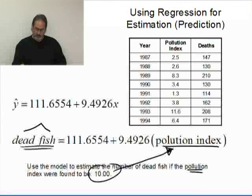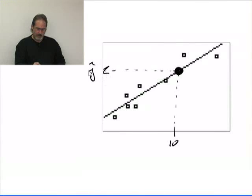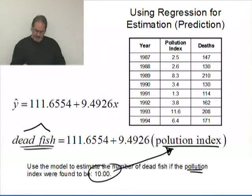Here's our scatter plot of the data. I'm going to say roughly here, I'm just guessing, is 10 for the pollution index. We don't have a data value at 10, so we're going to use the value on the line—that y value, that y hat—that's going to be our estimated value of dead fish. Let's go to the calculator and actually do that.